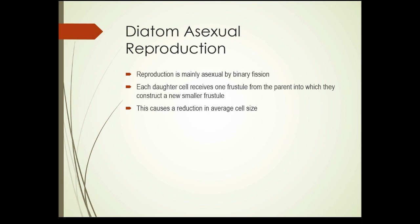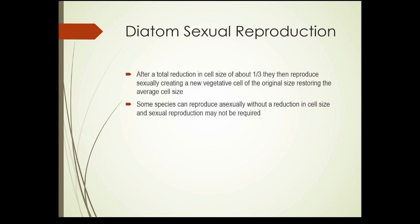They have a solution to that problem. Once the diatom cell has been reduced in size by about one third, they form a fertile cell that reproduces sexually, which creates a new vegetative cell back at the original size, restoring the average cell size. Now, some species can reproduce asexually without a reduction in cell size, so sexual reproduction may not be required for those species. Other species don't have that ability and need this sexual reproduction stage in order to maintain the average cell size.